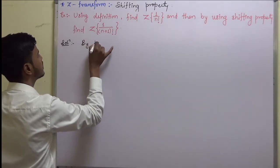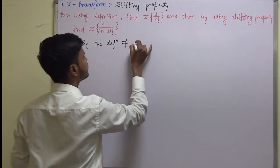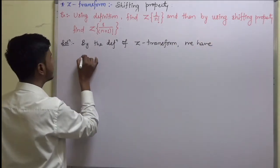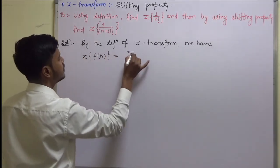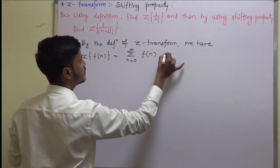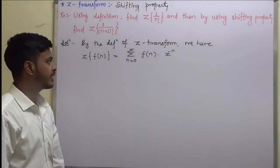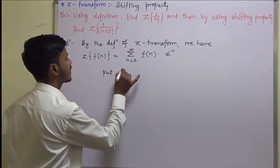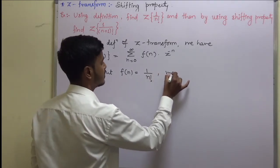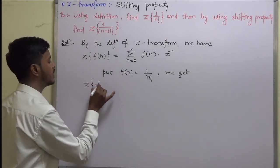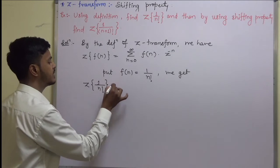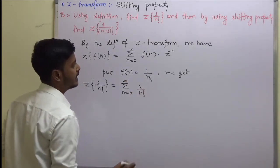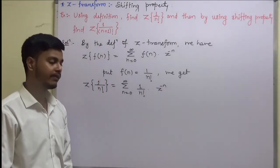By the definition of z-transform, we have: z-transform of f(n) is equal to summation n equals zero to infinity of f(n) into z to the power minus n. Now we have to find the z-transform of 1 upon n factorial, so just put f(n) equal to 1 upon n factorial. We get z-transform of 1 upon n factorial equals summation n equals zero to infinity of 1 upon n factorial into z to the power minus n.